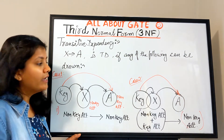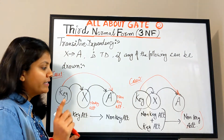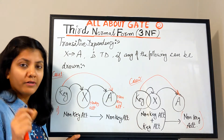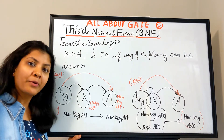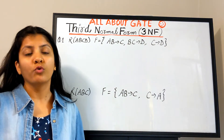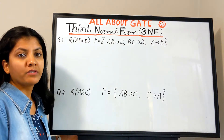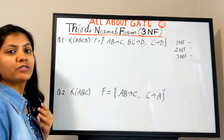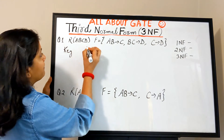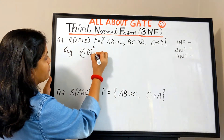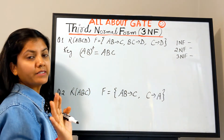For third normal form, if you find any dependency of either of these two natures in your functional dependency set, the relation is not in 3NF because it has transitive dependency. Now let's solve some questions. I have two relation schemas with their functional dependencies. The goal is to find the highest normal form. First, let's find the key by computing AB⁺: AB → C, and C → D, so AB⁺ = ABCD. Therefore AB is the only key.